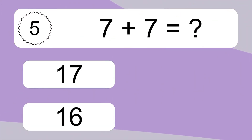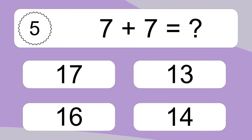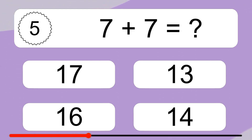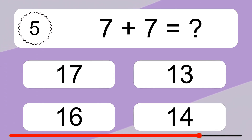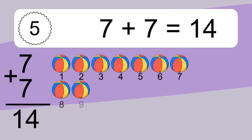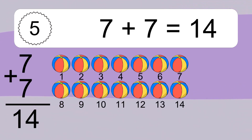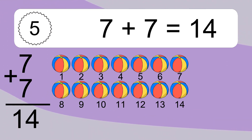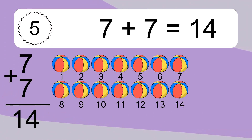7 plus 7 equals what? 7 plus 7 equals 14. Let's count it. 1, 2, 3, 4, 5, 6, 7, 8, 9, 10, 11, 12, 13, 14.